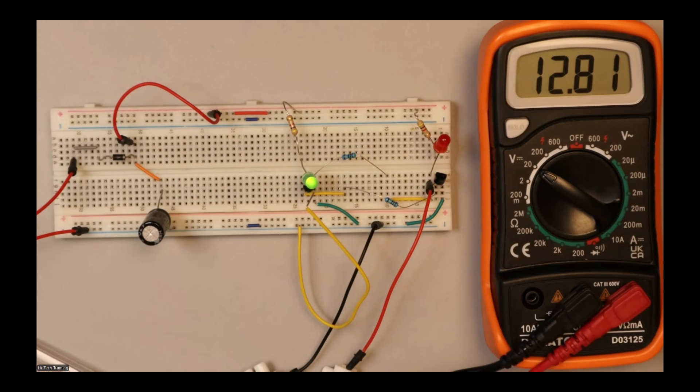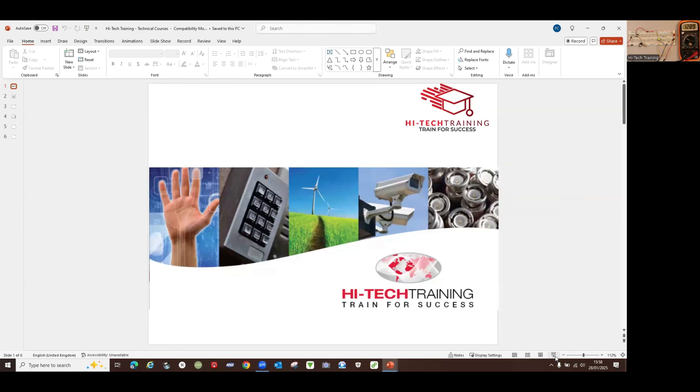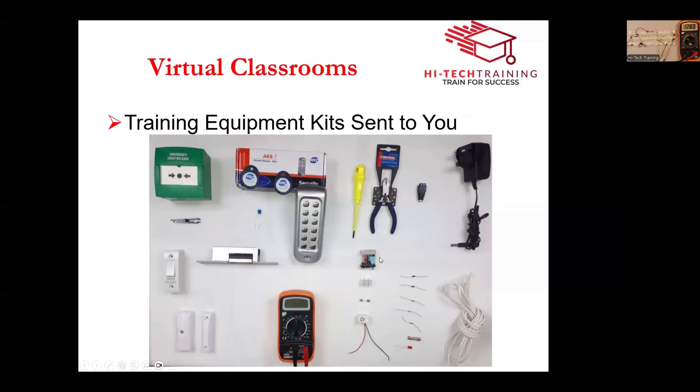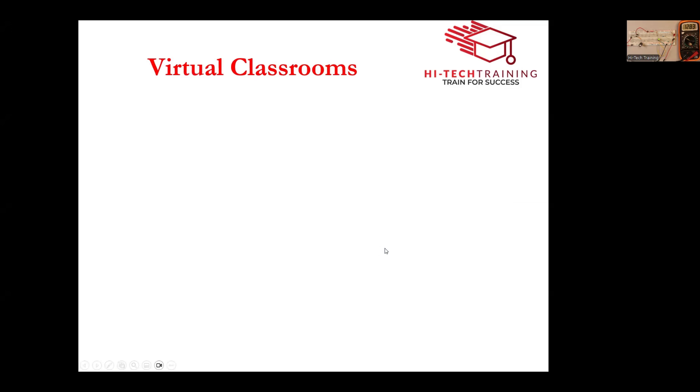I'm just going to go into a slideshow for a second, just to make sure I tell you all the information I need to go through with you. So that's a picture of some of the courses that we do there. This is the kit we would send out to you. This one's for access control. For example, you get a keypad, emergency break glass unit, a press to exit button, various tools, meter components, and so on. It's different obviously for different courses.